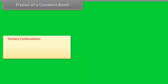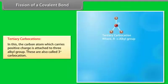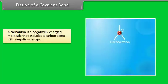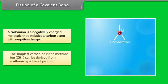Tertiary carbocations — the carbon atom which carries positive charge is attached to three alkyl groups; these are also called three degree carbocations. A carbanion is a negatively charged molecule that includes a carbon atom with negative charge. The simplest carbanion is the methide ion, which can be derived from methane by a loss of a proton.